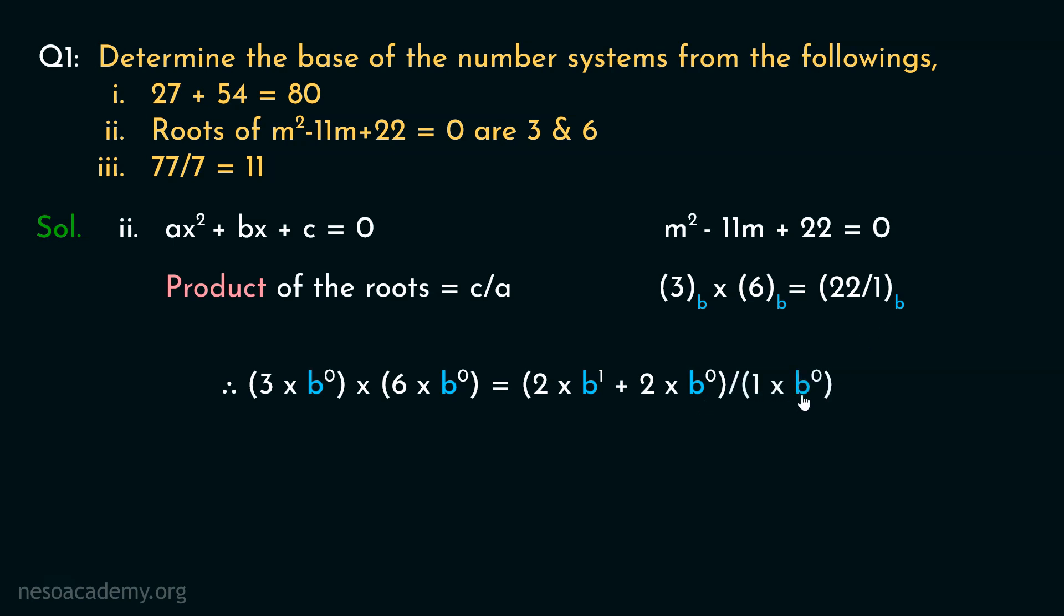Therefore, from this we can determine 3 into 6 equals 2b plus 2, as this one is going to derive 2b plus 2. And 1 into b raised to the power 0 is simply 1. So we can state 3 times 6, that is 18, equals 2b plus 2. Now if we subtract 2 from both the sides and then divide both the LHS and the RHS by 2, we will obtain the value of b as 8. Subtracting 2 from both the sides will get 2b equals 16. Then dividing both the sides by 2, we will obtain b's value to be 16 by 2, that is 8. So for this, the base happens to be 8.